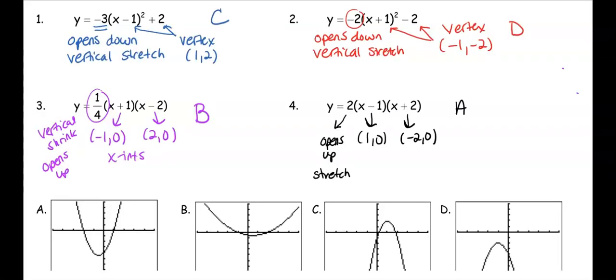Our first equation is in vertex form, so we want a vertex that is right 1 and up 2. Looking at the graphs, right 1 up 2 — it's going to open down and it's going to be a vertical stretch.